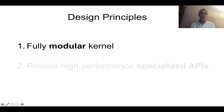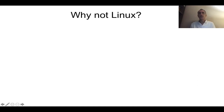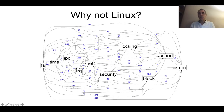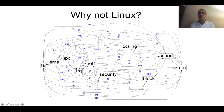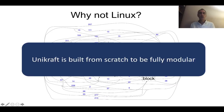On the modular kernel, one question would be: why not just use Linux and configure it? To answer this question, we put together a dependency graph for the major subcomponents of Linux. If you see a line between two such components, it means there is a dependency. The blue numbers above them is how many dependencies there are. It becomes pretty clear that it's kind of hard to take out one of these components — it requires a lot of engineering effort. So Unicraft is built from scratch to be fully modular.